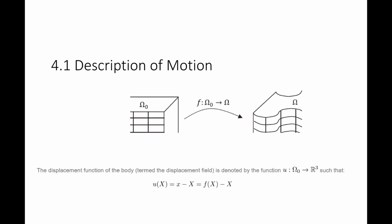The displacement function is equal to the difference in the position functions. So, u of X, the displacement of every point X, is equal to the new position, small x, minus the original position, capital X, which is equal to f of X minus X.